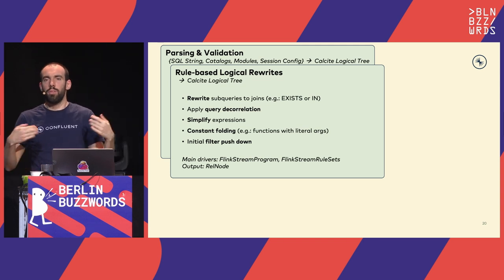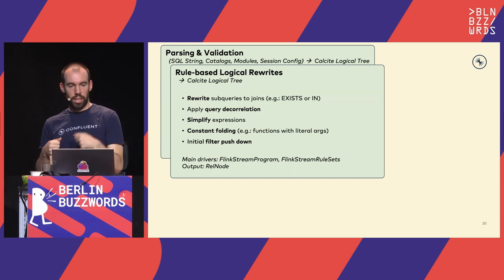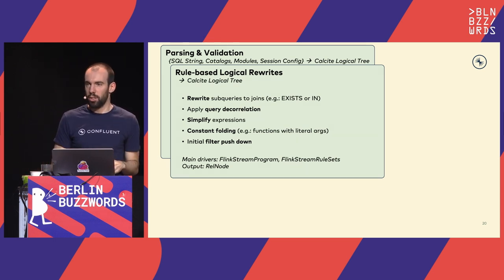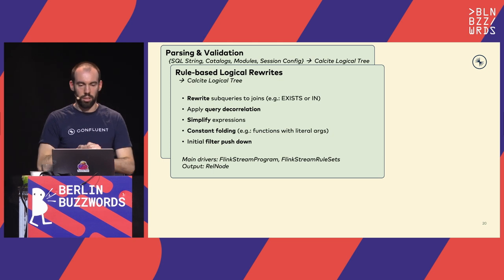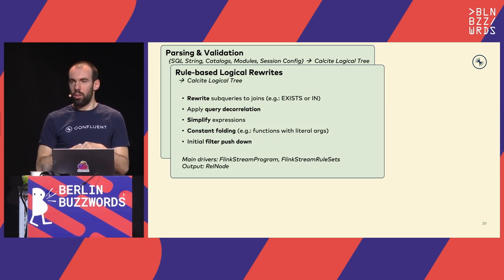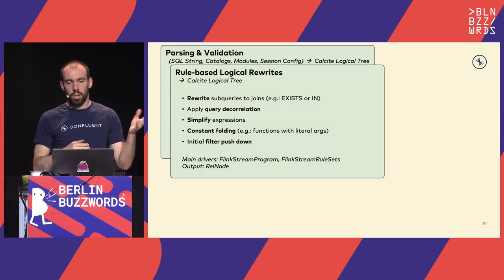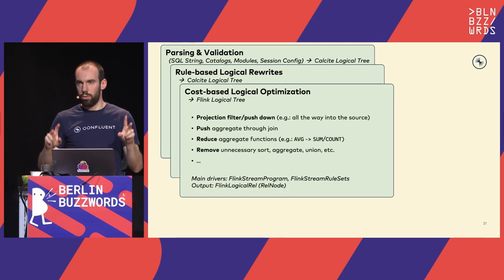Similar to parsing and validation, Flink performs rule-based logical rewrites — typical research paper-like things: rewriting subqueries into a join, applying query decorrelation, and simplifying expressions. If you have 1 plus 1, it will be simplified to 2 at planning time rather than executing it during runtime. If you're calling a function with a constant, execute the function immediately instead of at runtime. The output here is a Calcite logical tree — we use Apache Calcite, an open source database framework, as infrastructure for parsing, validation, and logical rewrites.